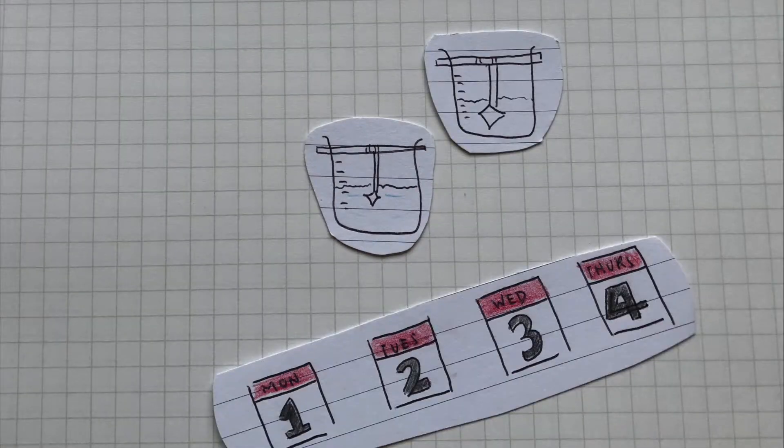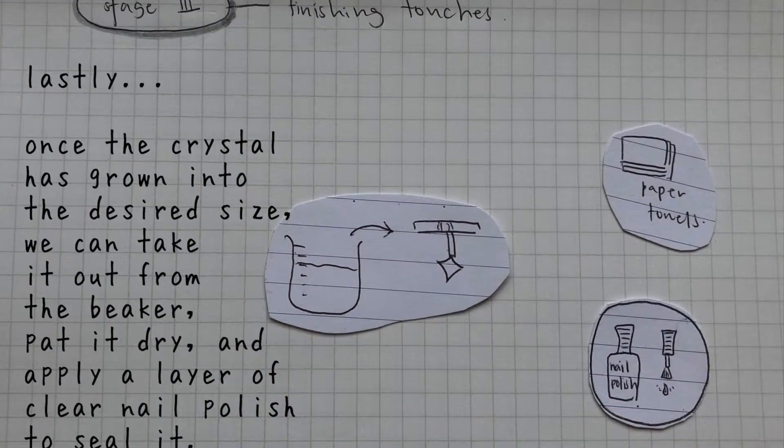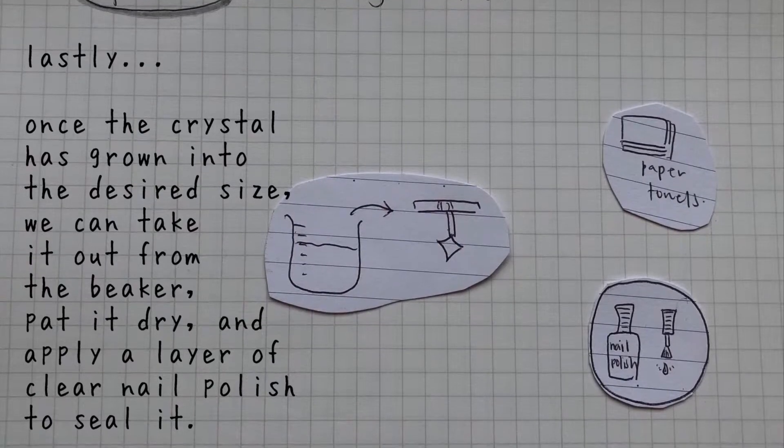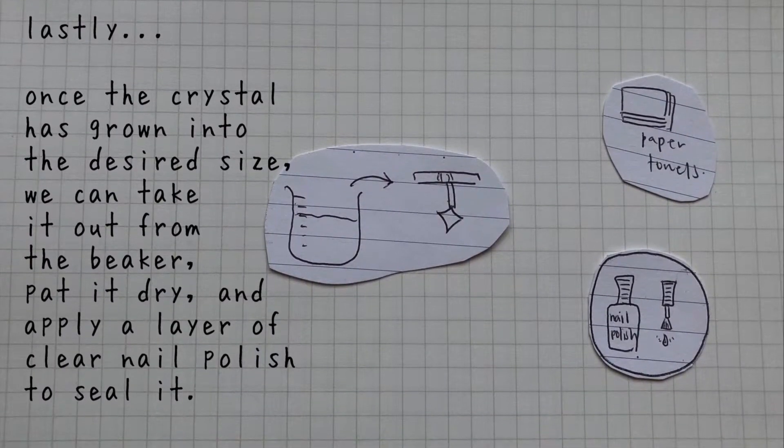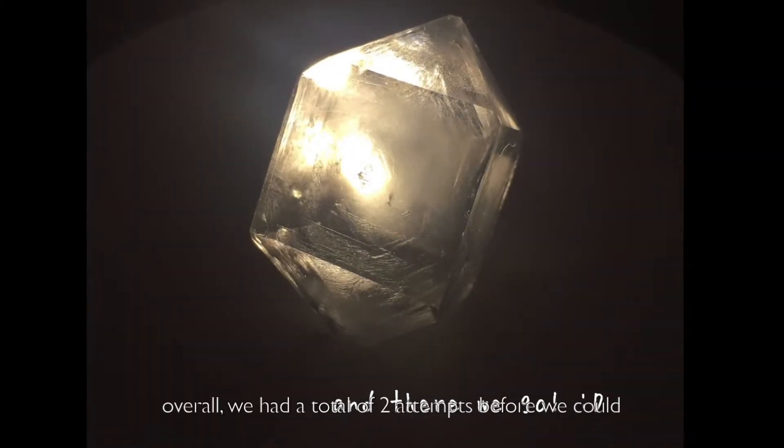Lastly, once the crystal had grown into the desired size we wanted, we took it out of the solution, dried it and sealed it with a layer of clear nail polish. And this is the final crystal that we have obtained.